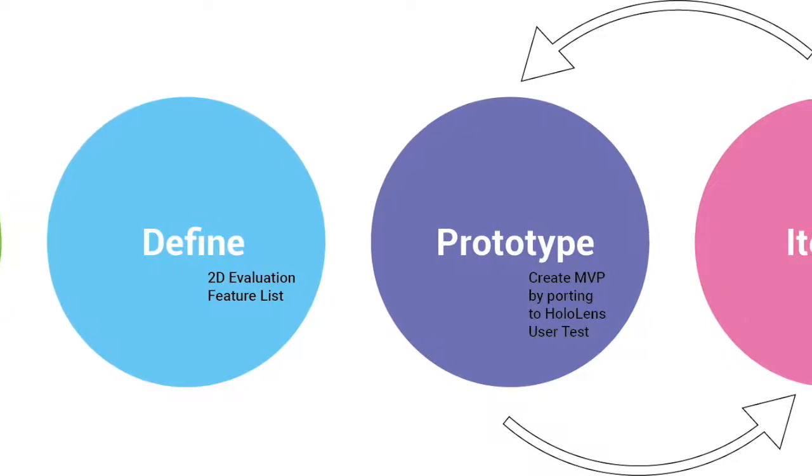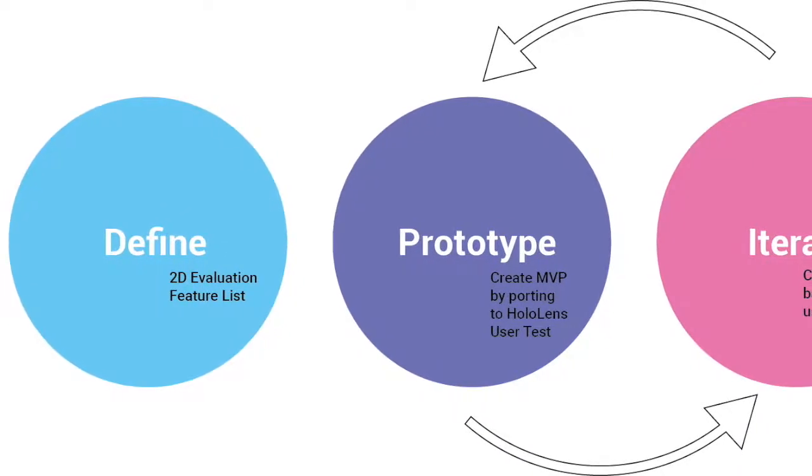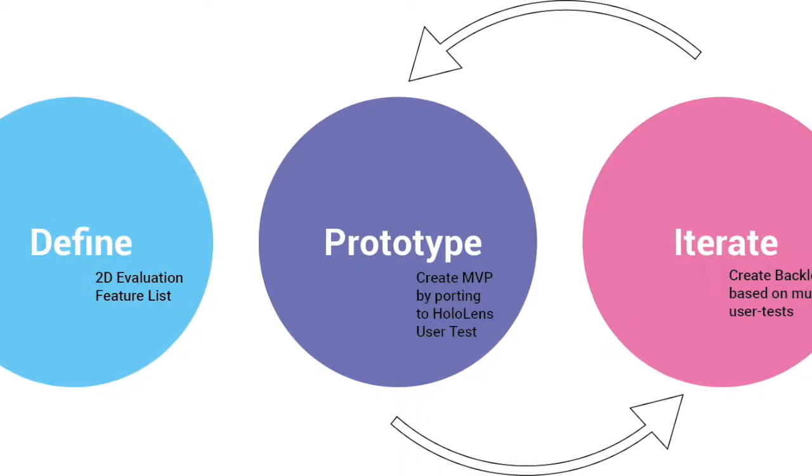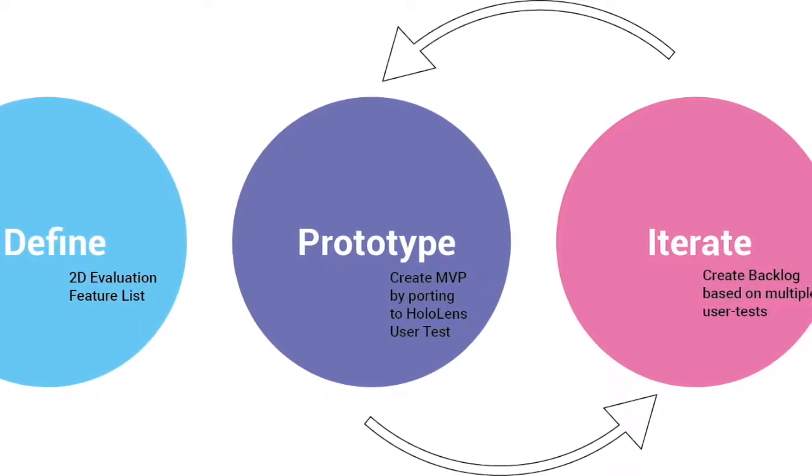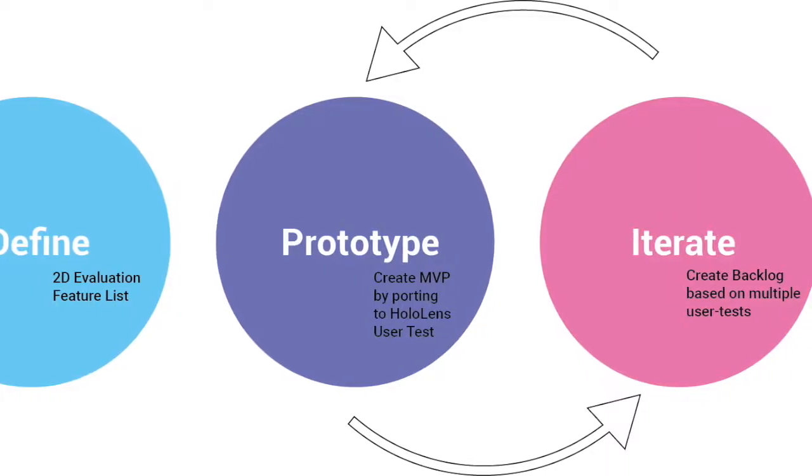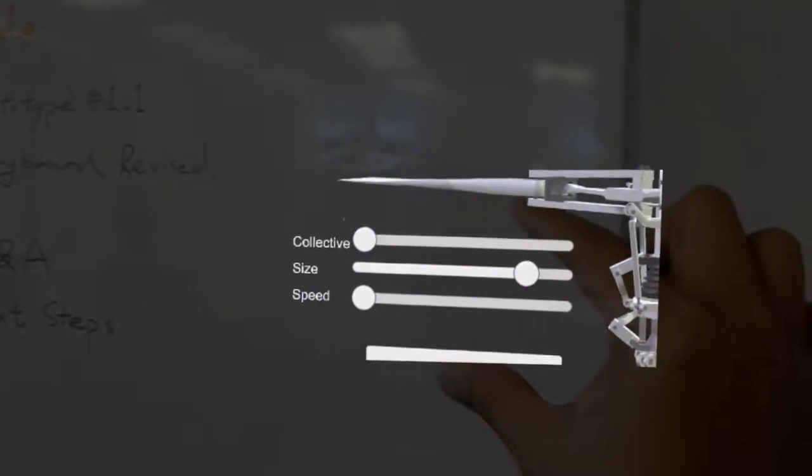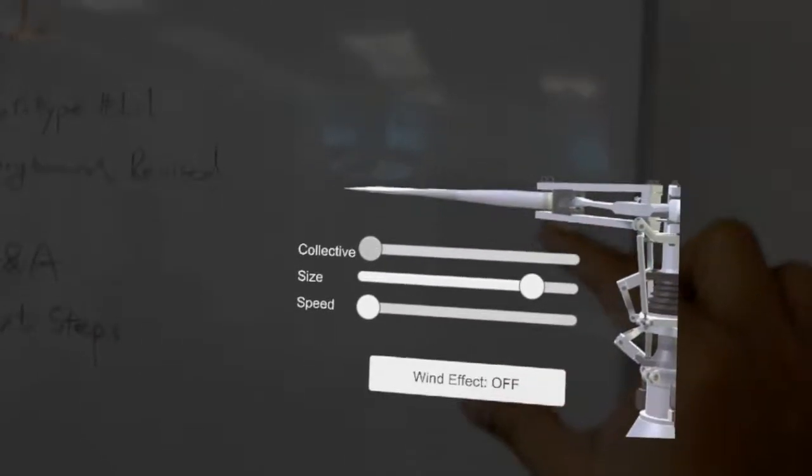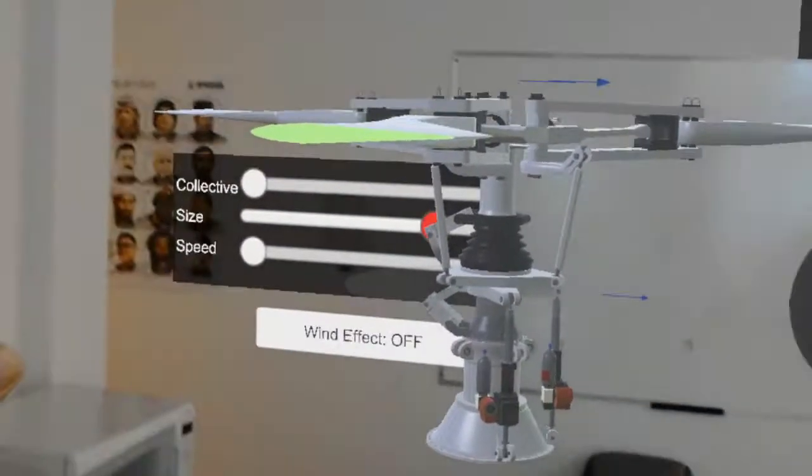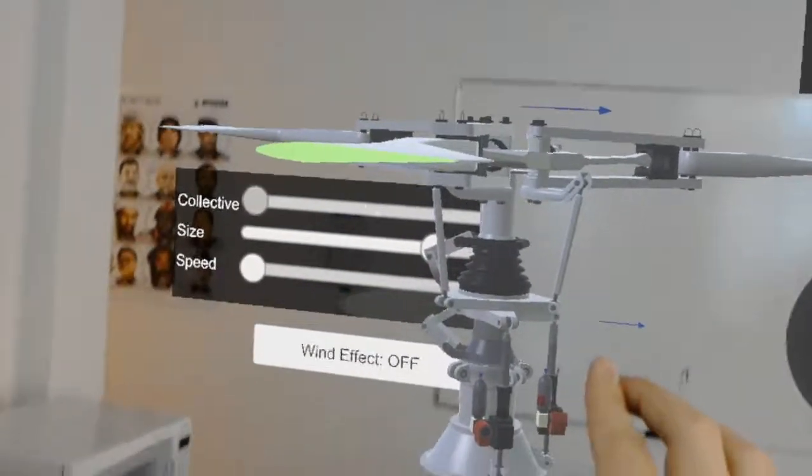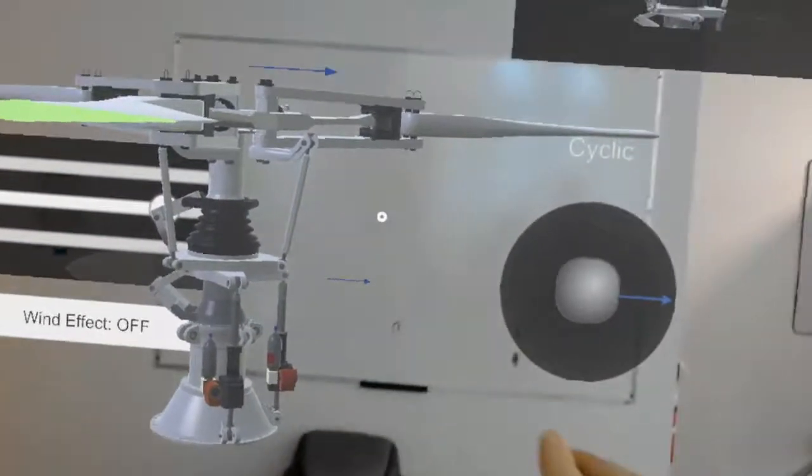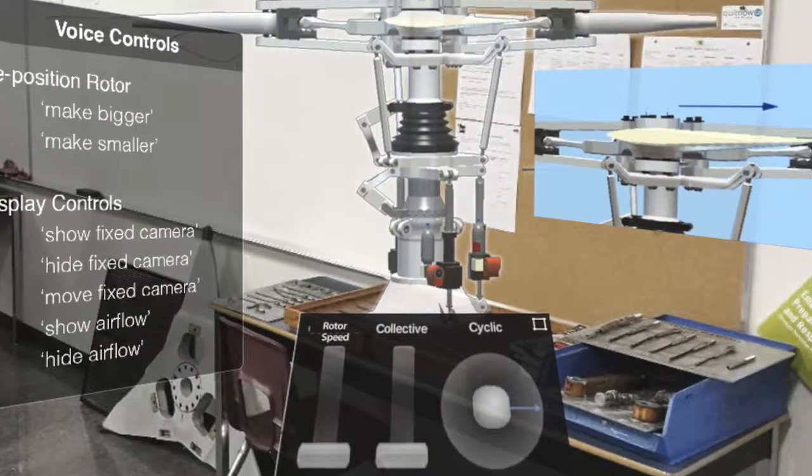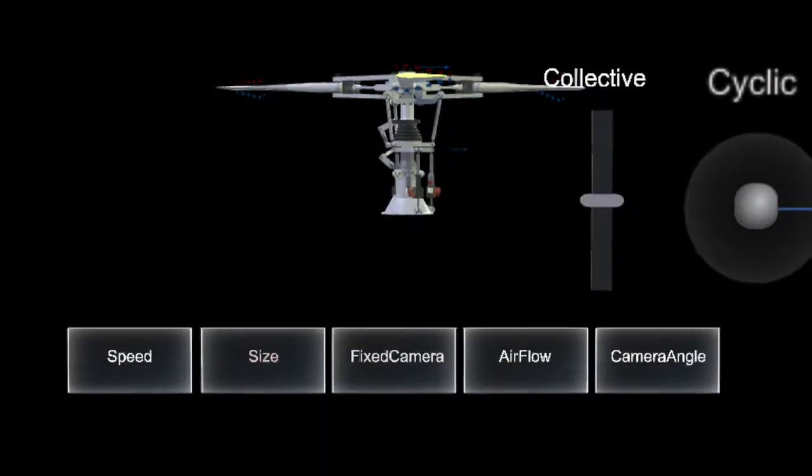The team created an MVP or minimum viable product within the first two weeks of the project start by importing the existing assets and layout into a HoloLens application. The MVP was tested and user feedback was captured to create a backlog. The backlog was groomed as a team and new prototypes were produced and user tested in bi-weekly intervals.